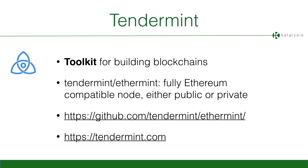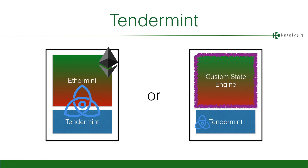Fortunately, some companies are starting to chop up these different architectural layers. Tendermint is one of them — we actually use their implementation of Ethereum, which allows us at least in the short term to use exactly the same code we would use on Ethereum, knowing we can move to a much more flexible architecture in the longer term. You can either use their Ethereum implementation — going directly from Ethereum to Ethermint — or you can customize the top layer and only use the consensus engine they provide. I strongly recommend checking out what Tendermint does.